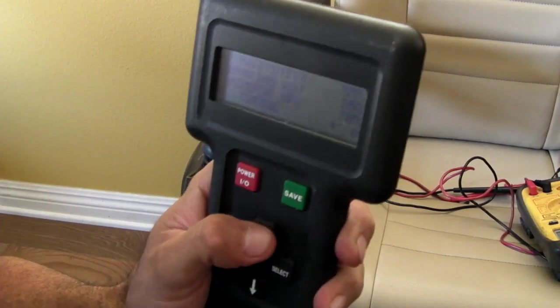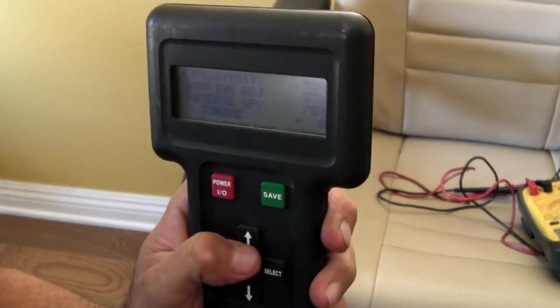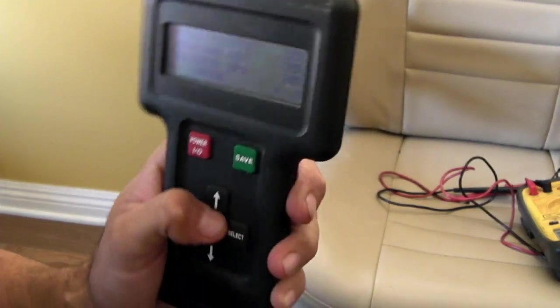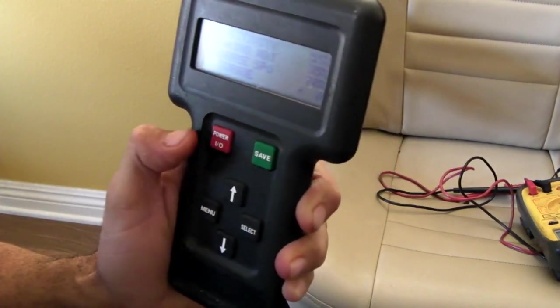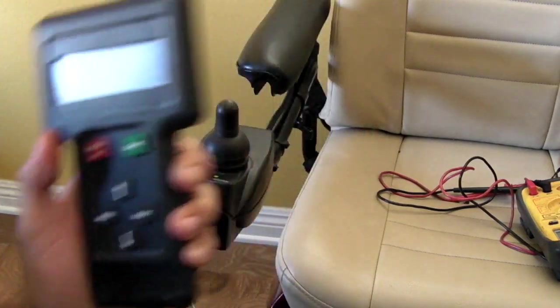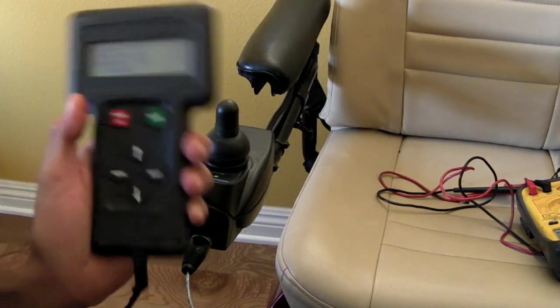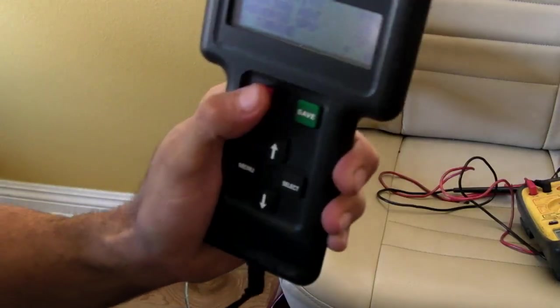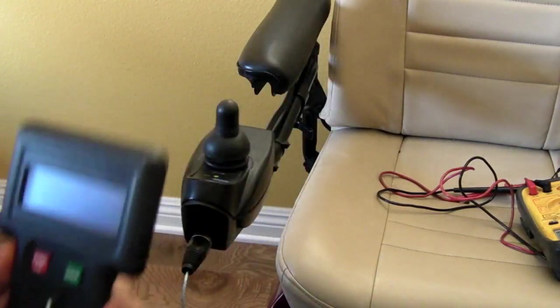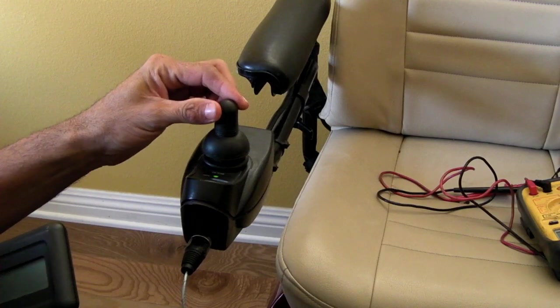So, you change all the settings. The way I did it, like I mentioned before, is I would change something. You save it. Then you power off the unit, and you don't even have to unplug it. You can start driving right away. So, if you power off the unit, the chair can drive now.